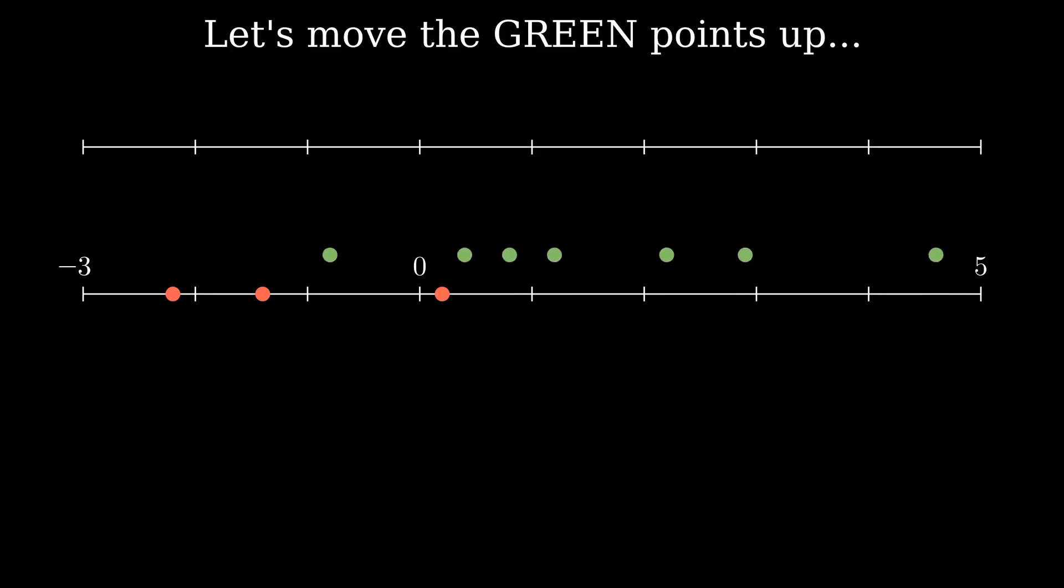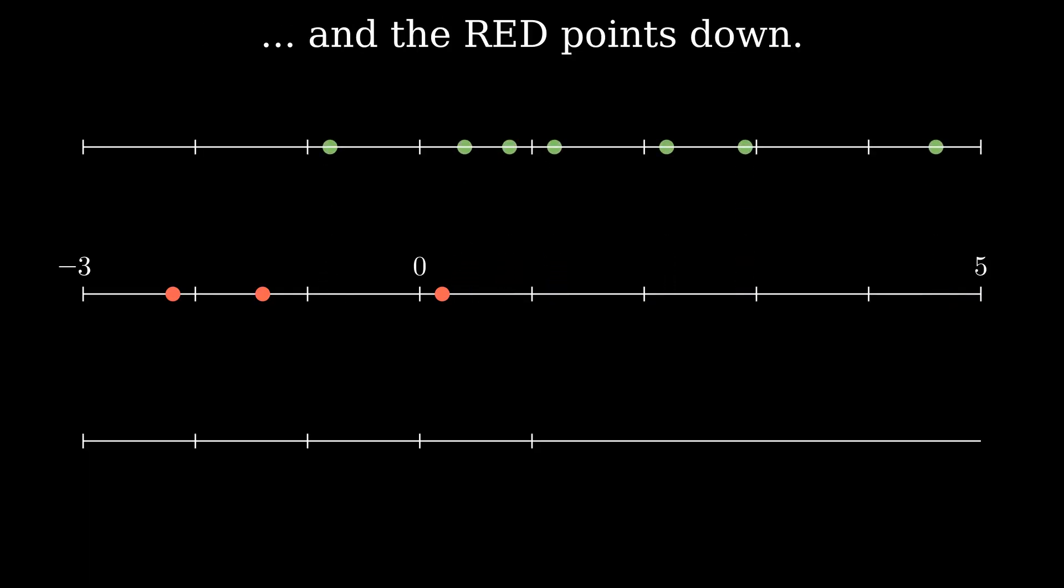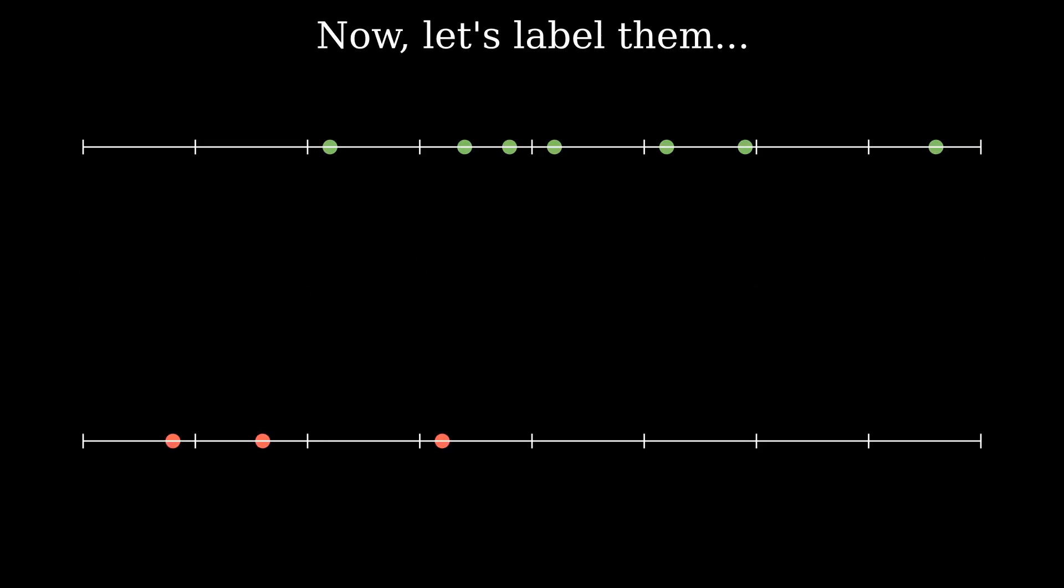Three red points in the negative class and seven green points in the positive class. Now, let's move the green points up and the red points down. The green points are labeled as one, while the red points are labeled as zero.